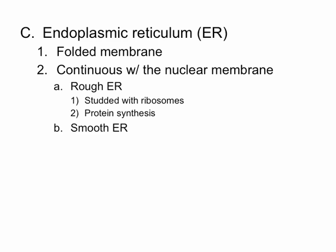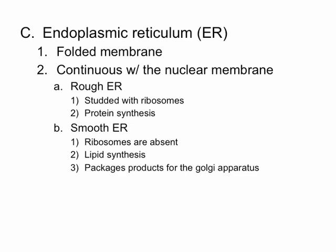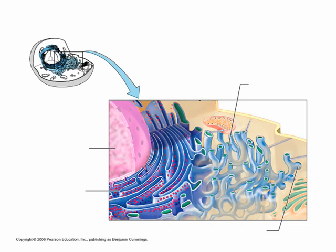The smooth ER, on the other hand, is named as such because it lacks ribosomes. Its function is lipid synthesis — so we're making fats. It also packages products to be sent to another organelle called the Golgi apparatus. In the picture, the part of the blue membrane with red ribosomes attached is the rough ER, and as it goes further from the nucleus, the membrane becomes more tube-like — that tube-like area is the smooth endoplasmic reticulum.